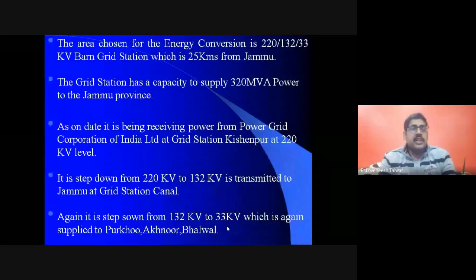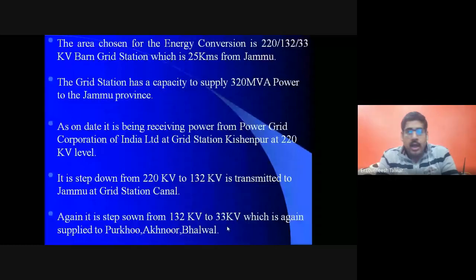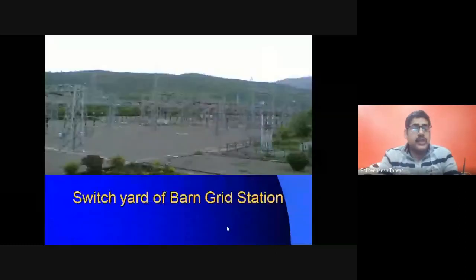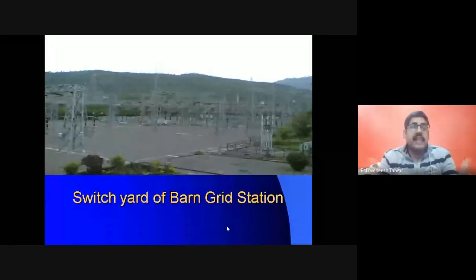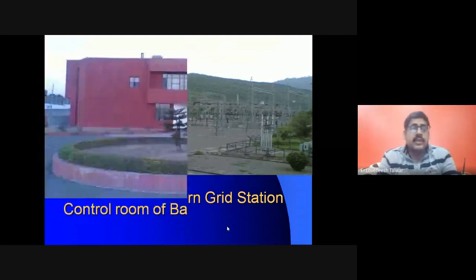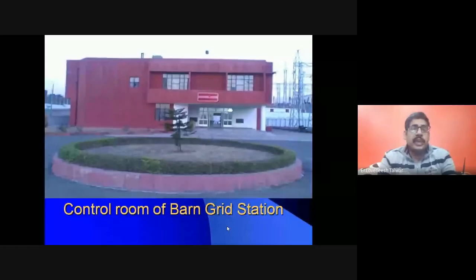The area chosen for energy conservation is the 220/132/33 kV Bern Grid Station, about 25 kilometers from Jammu. It is a receiving station where power is received from generating stations and distributed onward. The grid station has a capacity of 320 MVA supplying power to the Jammu province. This presentation shows the switch yard of the grid station and its control room.